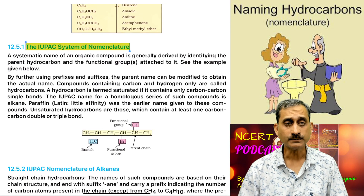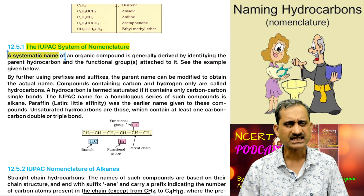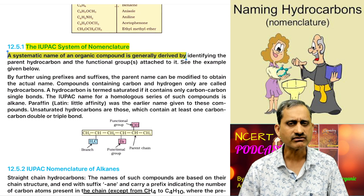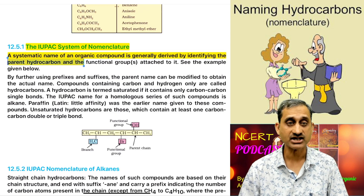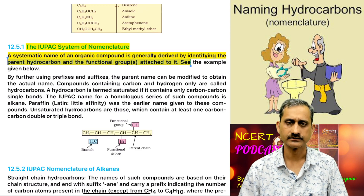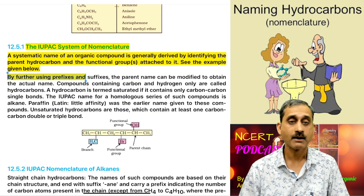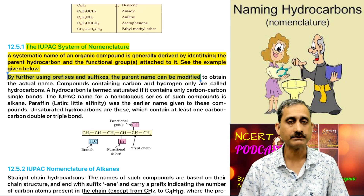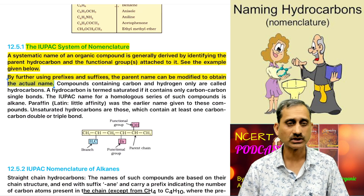The IUPAC system of nomenclature: a systematic name of an organic compound is generally derived by identifying the parent hydrocarbon and the functional groups attached to it, as shown in the example below. By further using prefixes and suffixes, the parent name can be modified to obtain the actual name.